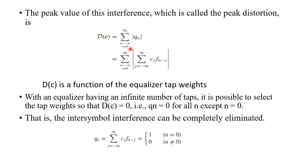The peak value of the inter-symbol interference, called the peak distortion D(c), equals Σ(n ≠ 0) |q(n)|, where q(n) = Σ(j=−∞ to +∞) cj · f(n−j). D(c) is a function of the equalizer tap weight coefficients. With infinite taps, it is possible to select tap weights so that D(c) = 0: q(n) = 1 for n = 0, and q(n) = 0 for n ≠ 0, completely eliminating ISI.